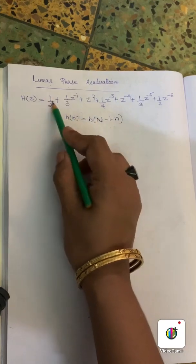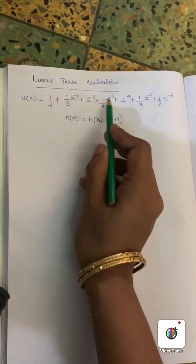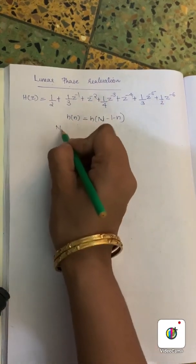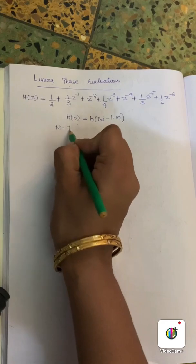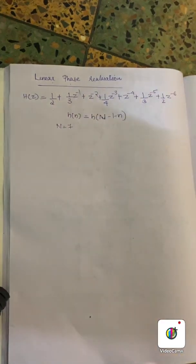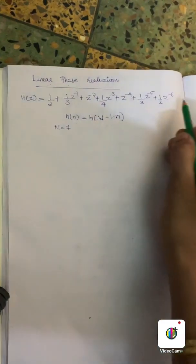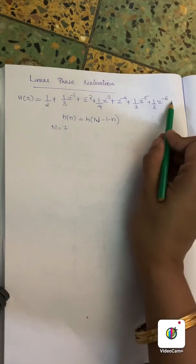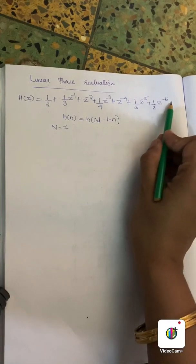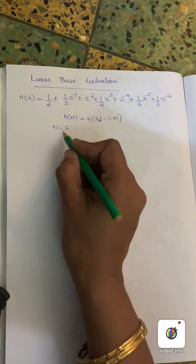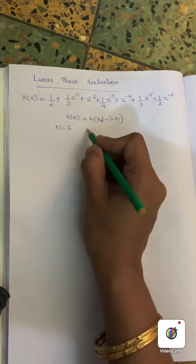We count: 1, 2, 3, 4, 5, 6, 7 — so n equals 6, meaning N equals 7. There are 7 terms, so N equals 7.